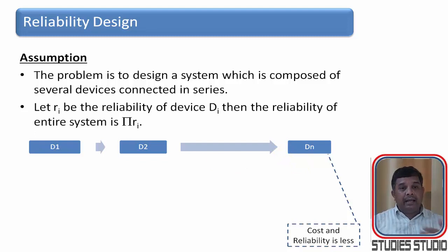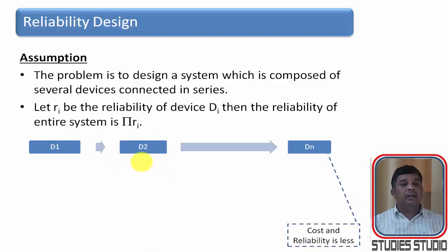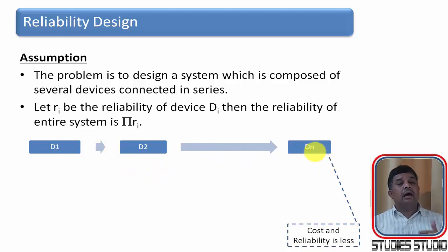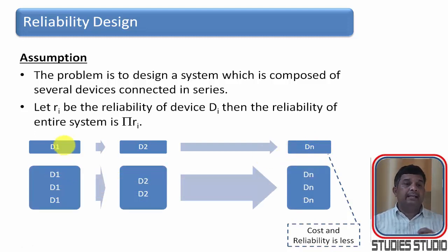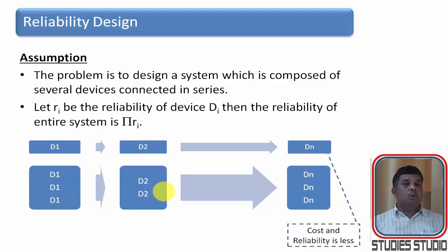In order to enhance reliability, we generally keep spare machines so that whenever some device fails, we can use the standby and it will not hamper production much. In this example, there are two more machines kept for D1, two more for D2, and three more for Dn. However, when we keep a spare machine it costs more money, so it increases cost as well as reliability.